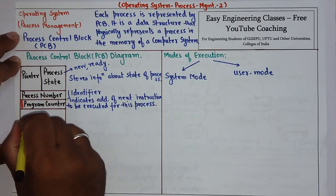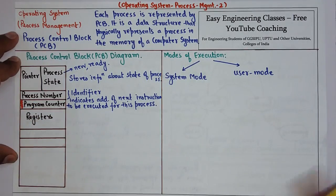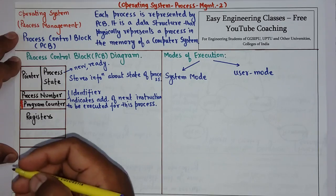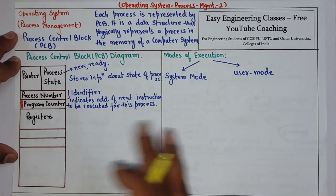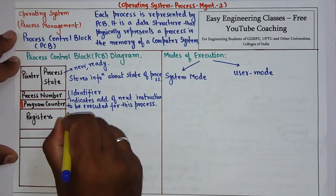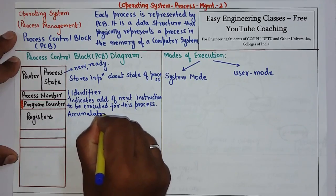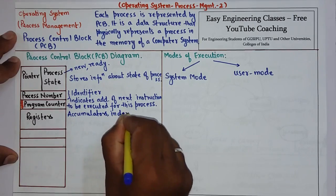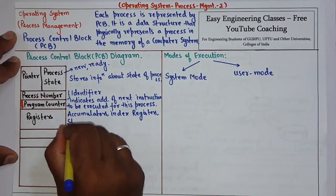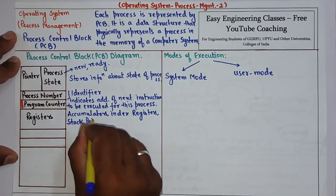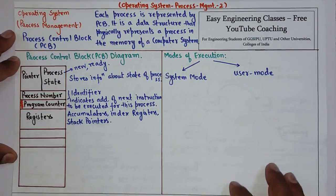Then we have certain registers present in the PCB. These registers vary in number, size, and type depending on the computer architecture. They can include accumulators, index registers, stack pointers, and so on.